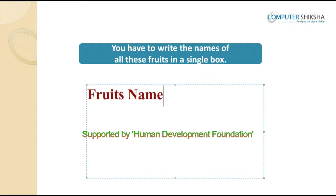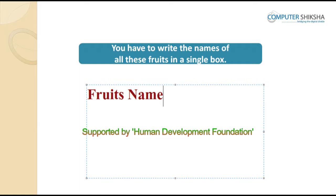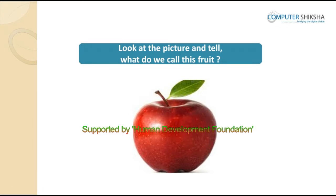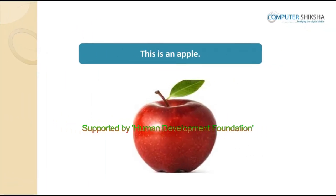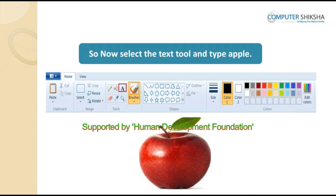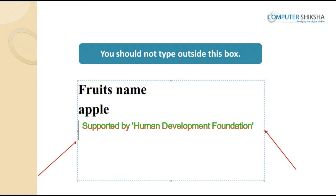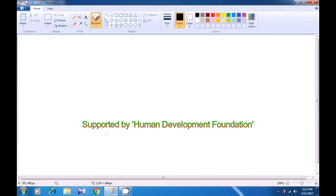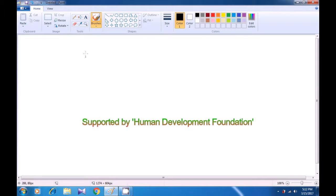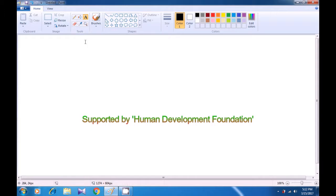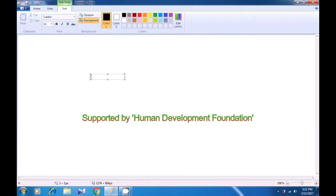We begin today's class by typing the names of four fruits. Note that you have to write the names of all these fruits in a single box. Look at the picture and tell what we call this fruit — this is indeed a picture of an apple. So go ahead, select the text tool and type the name apple. First, choose the text tool, then come to the drawing area in the paint sheet and drag a rectangle as is being shown in the video.